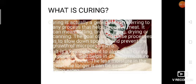It can be salting, brining, aging, drying or canning. So the basic goal of all of these processes is to slow down spoilage and prevent the growth of microorganisms.